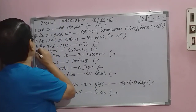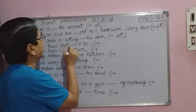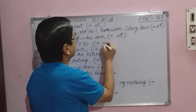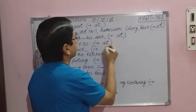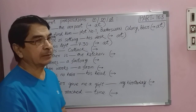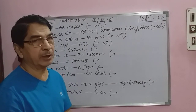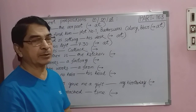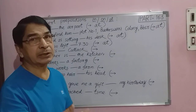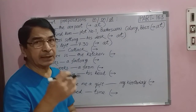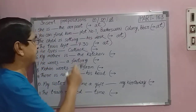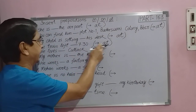Question number four: The train left ___ 7:30. Here we use AT for time expressions. For example: The school is over at 4 pm; at 6:30 pm; at 12 noon. For specific time expressions, we always use AT.